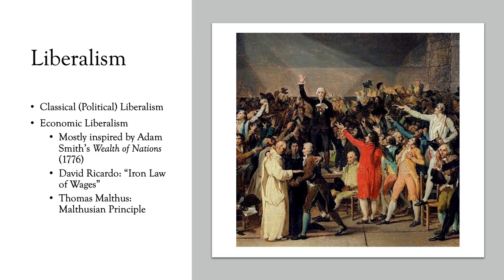Two other men expand upon Adam Smith's ideas in the tradition of economic liberalism. The first is David Ricardo, another British economist, whose main contribution is the iron law of wages. He applies the law of supply and demand to wages: in the context of the Industrial Revolution, with an enormous labor surplus, the price of labor will always trend toward the minimum amount necessary to sustain the life of the worker. We will always have very low wages for the working class — to the detriment of the working class.